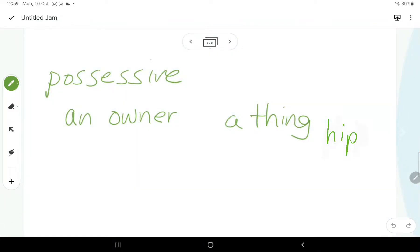However, for possessive apostrophes, we need to have an owner and a thing. So, for example, we could have a bike and the owner of the bike is the boy.